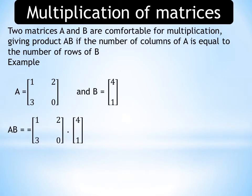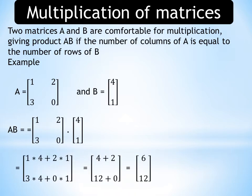For this we write AB equal to elements of matrix A into elements of matrix B. First row of matrix A is multiplied with the first column of matrix B and these elements are added: 1×4 + 2×1. Then second row of matrix A is multiplied with the first column of matrix B: 3×4 + 0×1. By solving, we get 4+2 in the first row and 12+0 in the second row, which gives us the matrix with elements 6 and 12.